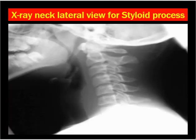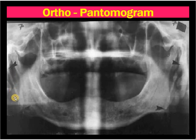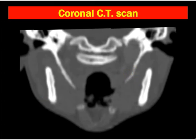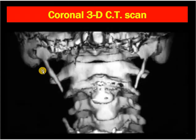You can see here the X-ray neck lateral view showing the styloid process. You can also see the styloid process on orthopantomogram. Coronal CT scan is the most important investigation of choice when the person has an elongated styloid process — you can see it coming out from the skull base down to the oropharynx, and this is probably an ossified stylohyoid ligament. The 3D CT is also a good choice, showing the whole length and course of the styloid process.